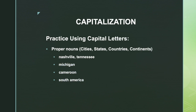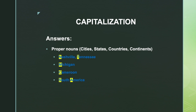Now let's practice with proper nouns such as cities, states, countries, and continents. The examples are Nashville, Tennessee; Michigan; Cameroon; and South America. The answers: N and T in Nashville, Tennessee are capitalized. M in Michigan is capitalized. C in Cameroon is capitalized. And S and A in South America are both capitalized.